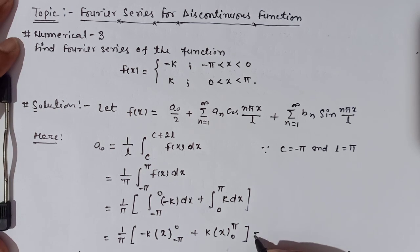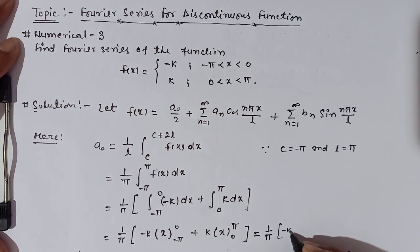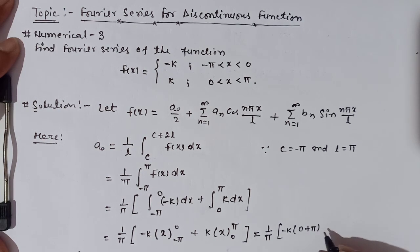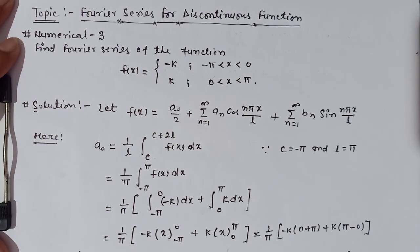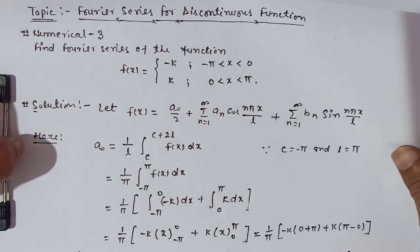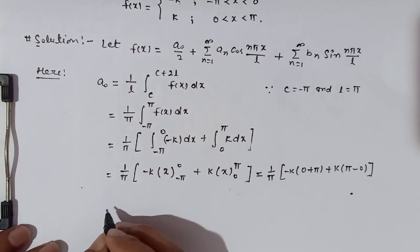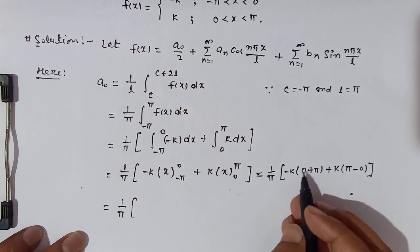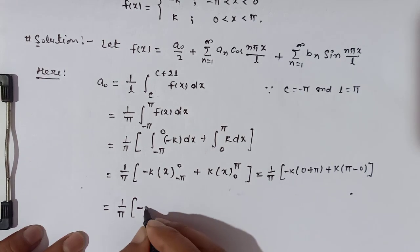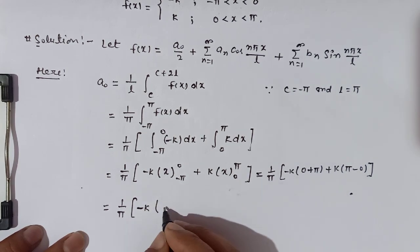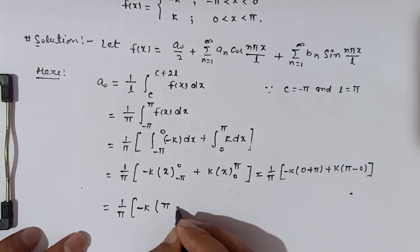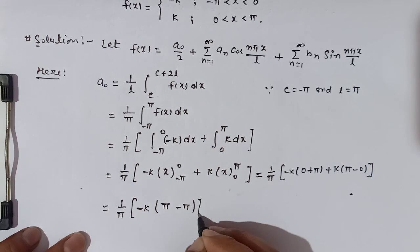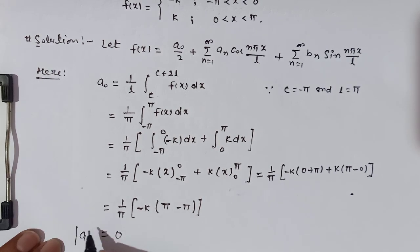Let's solve this further. We get 1/π times: solving gives -k, then 0, then minus minus plus, then π, plus k, and the upper limit π minus 0. So we get 1/π times [-k·π + k·π], which simplifies to: -k·π cancel with +k·π.